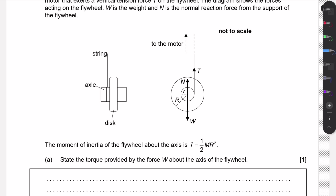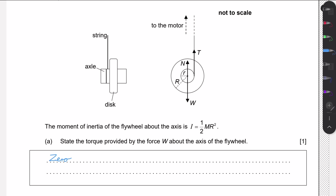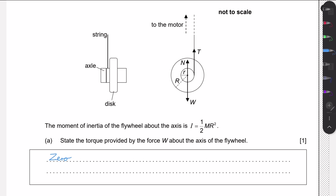First, we need to state the torque provided by the weight force W about the axis of the flywheel. This is a very easy mark — it's just zero, because any force passing through an axis has a torque of zero about that axis. To illustrate: suppose we have a beam fixed to a wall, and we apply some load to it.